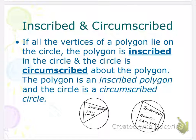And now we have another definition, inscribed and circumscribed. So if the vertices of a polygon lie on the circle, the polygon is inscribed in the circle. So where the two sides of a triangle or a quadrilateral or any polygon meet, that's on top of the circle, then we say that's inscribed in the circle. The circle is circumscribed about the polygon. The polygon is an inscribed polygon. And the circle is a circumscribed circle.